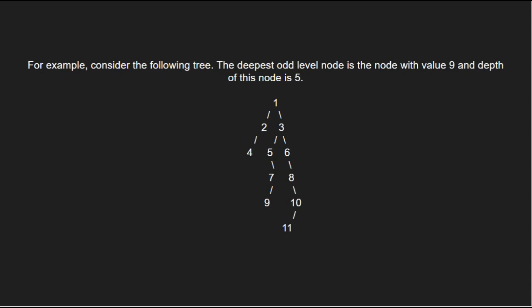The deepest odd level node is the node with value 9 and the depth of this node is 5. Now, let us have a look at the algorithm which will assist us in finding this.